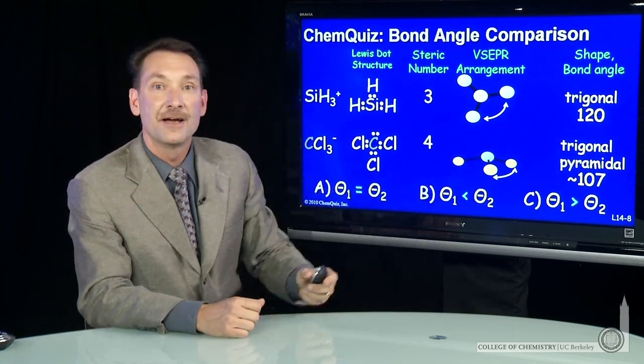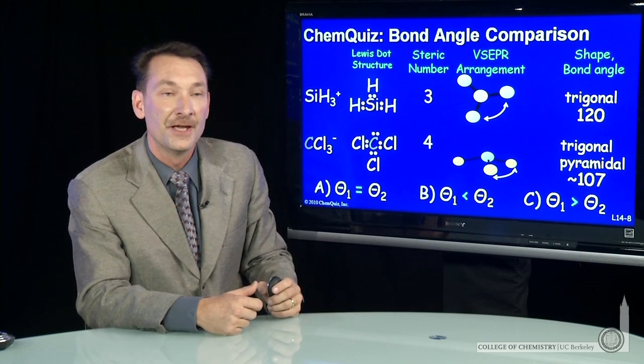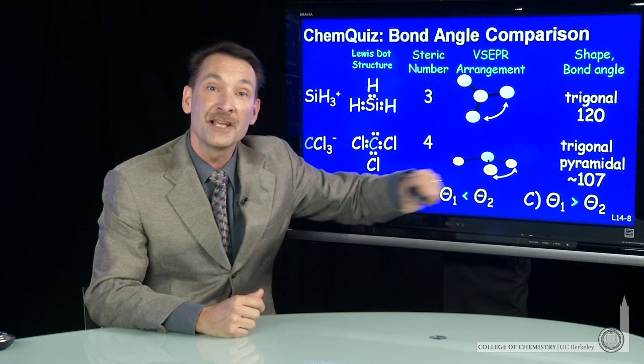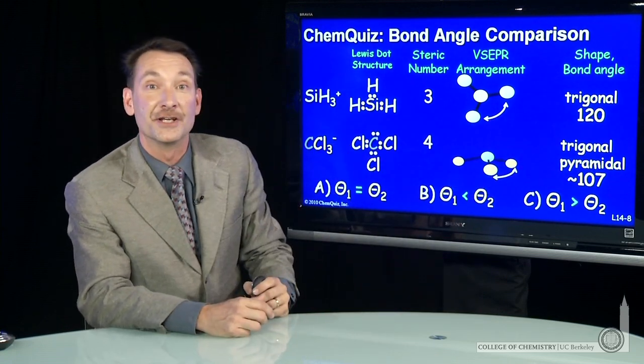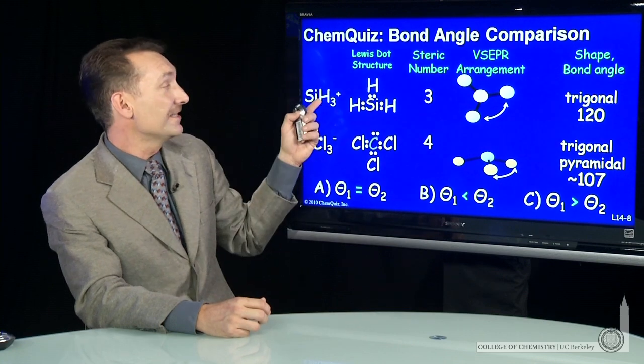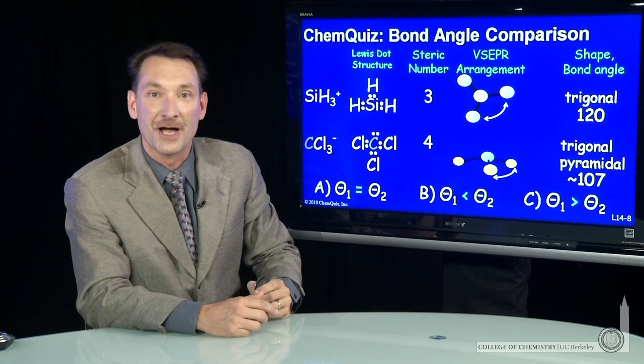So we know a bond angle something less than 109°, around 107°, and a bond angle of 120°. So in this case, SiH3+ has the larger bond angle compared to CCl3-.